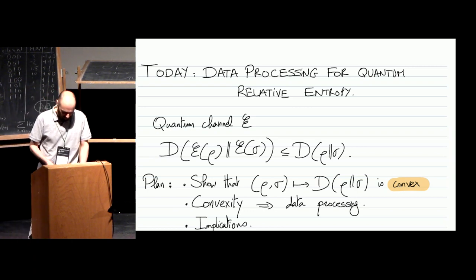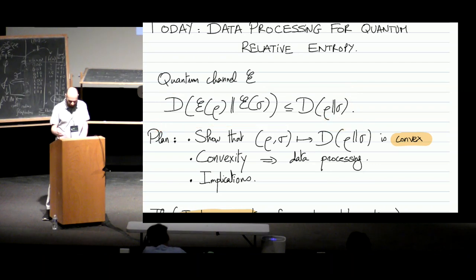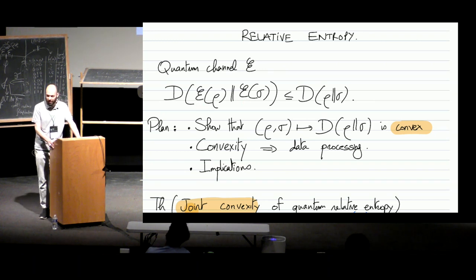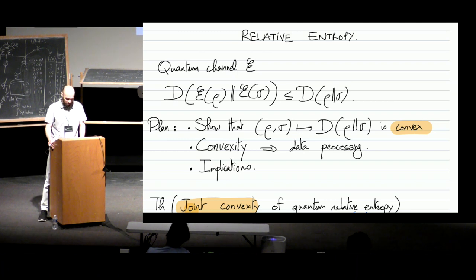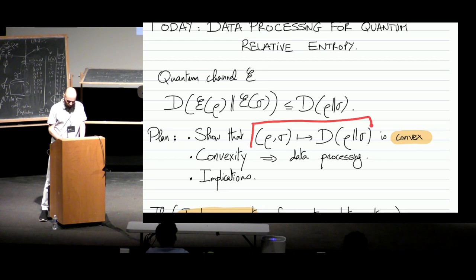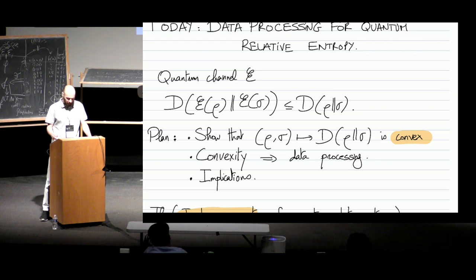So let's get to it. The main objective today is to show this inequality. I take two states, rho and sigma, or two positive operators in general, and I apply a quantum channel — the same quantum channel — to both sides. This says that the quantum relative entropy can only decrease. The plan is as follows: first we'll show a convexity result. This is a function that takes as input two positive operators and outputs a number, and it has the nice property of being jointly convex in the two inputs.